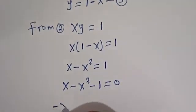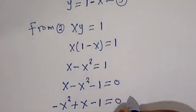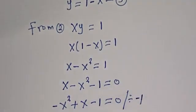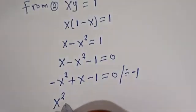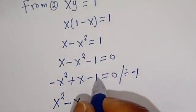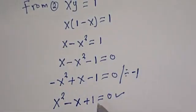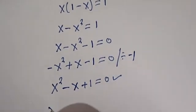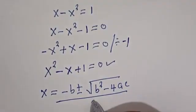Let's rearrange this. We have minus S squared plus S minus 1 is equal to 0. Let's divide through by minus 1: minus S squared becomes S squared, plus S becomes minus S, and minus 1 becomes plus 1, giving S squared minus S plus 1 is equal to 0. This is a quadratic equation, which can be solved using the quadratic general formula: S equals minus B plus or minus square root of B squared minus 4AC,